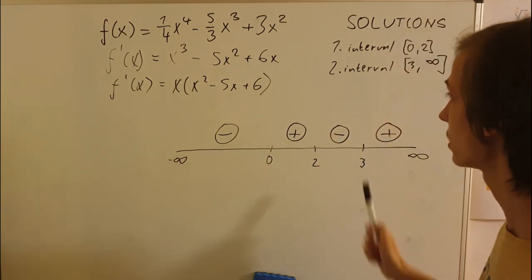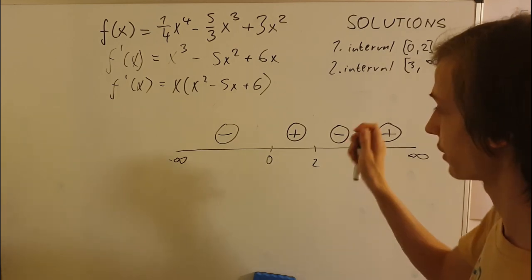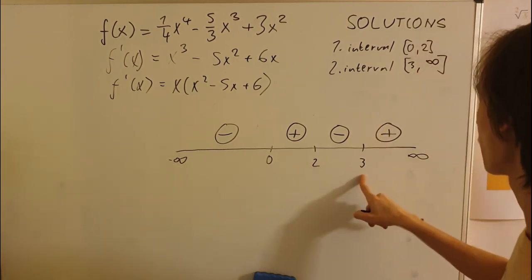And we were looking for the ones that were positive because when our derivative is positive, that means the function is rising on this interval. So we know the function is rising from zero to two and from three to infinity.